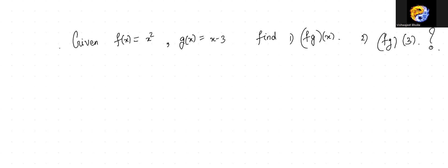In this particular question, we have been given that f of x is x squared and g of x is x minus 3.